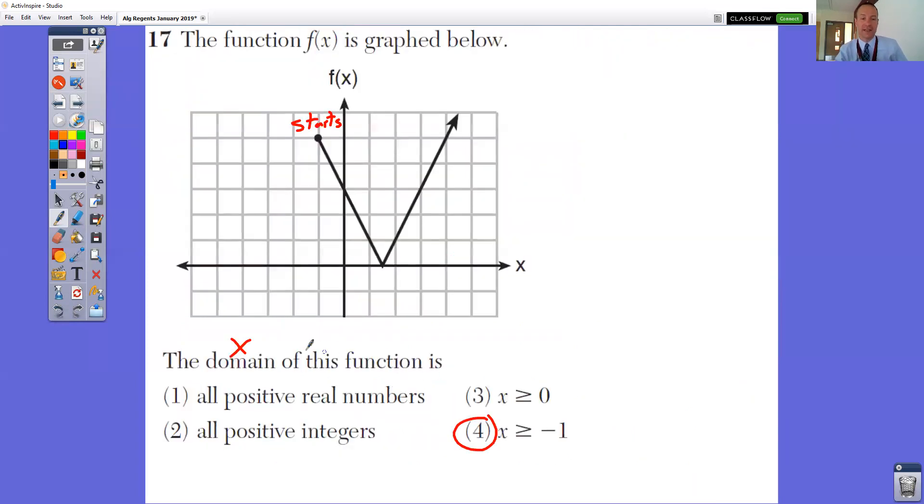In number 17, the domain of this function, domain are your X values. Notice that we have a dot here, not an arrow. So it starts off at negative 1 for our X value, and it keeps on going. So it's all the numbers that are bigger than negative 1 for X value or equal to it, because it's a solid dot. If it was an open dot, it would just be greater than.